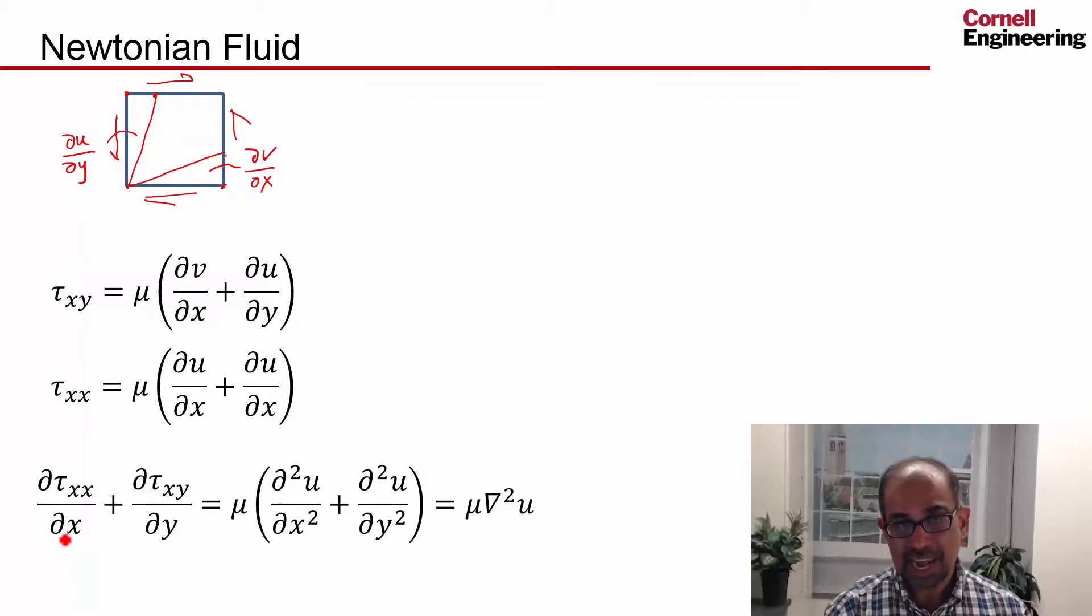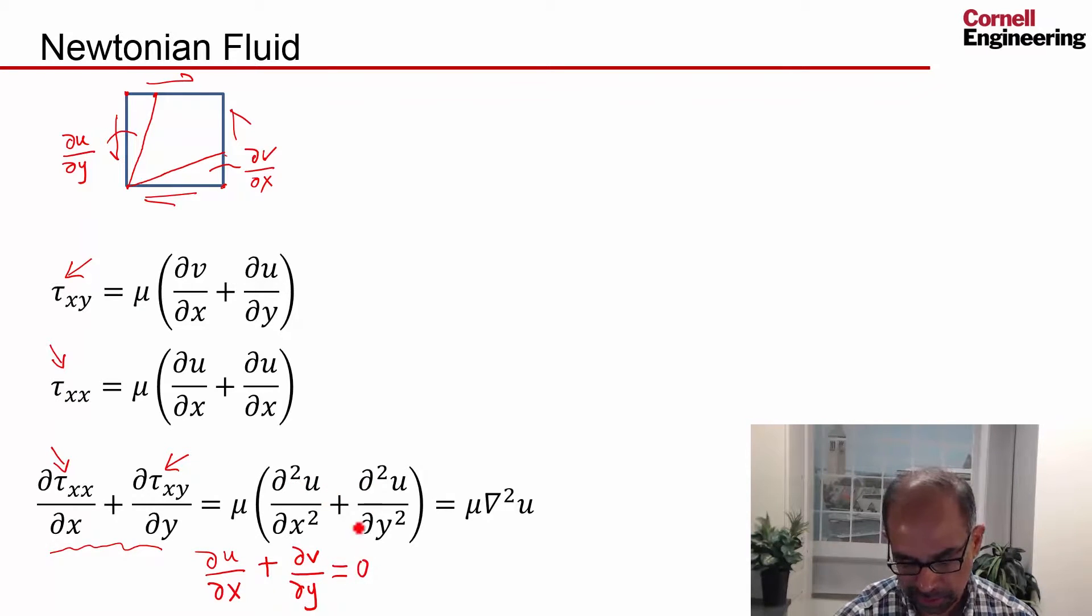Earlier, we saw that the net viscous force in the x direction per unit volume is given by the left hand side shown over here, so I can substitute this expression for tau xx in here, and this expression for tau xy in here, and I'm going to get second derivatives, because I have to differentiate this. And I'll get this form, but to get this form, I have to use continuity, the incompressible form. So I've used du dx plus dv dy is equal to 0 to get this form.